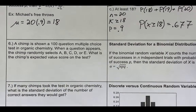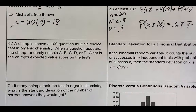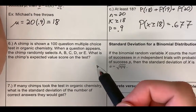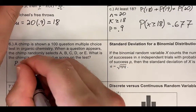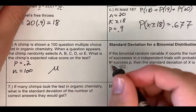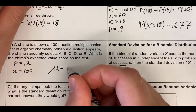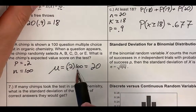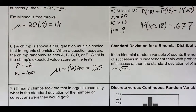Let's apply the expected value formula to the chimp example. A chimp is shown a 100-question multiple-choice test in organic chemistry with five options, selected randomly. We assume the chimp knows nothing about organic chemistry. It is binomial — clear success or failure, P = 0.2 (one out of five options), N = 100. So mu = 0.2 times 100 = 20. On average, the chimp will get 20 questions correct.